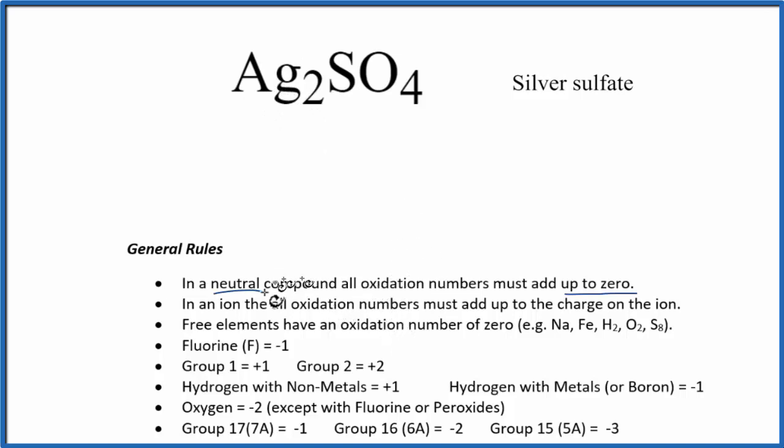There is a rule that helps us though, and if we have an ion, like the sulfate ion here, the oxidation numbers have to add up to the charge on the ion. So if I know the charge on the sulfate ion, I could figure out the charge on the silver ion.